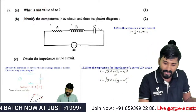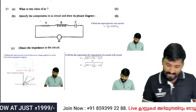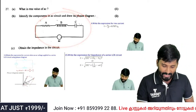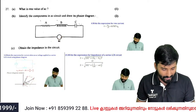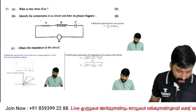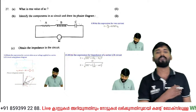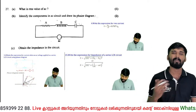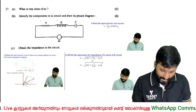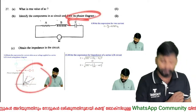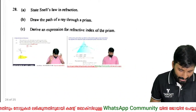Identify the components of an LCR circuit and obtain the expression for impedance. Impedance Z equals the square root of R-squared plus (X_L minus X_C) squared. This is a simple and important formula.